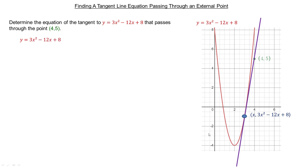Now we do need the derivative, so we're going to differentiate. Using the power rule: 3 times 2 is 6, and we decrease the exponent by 1, so it's 6x. The derivative of negative 12x is just negative 12. So y prime, or dy/dx, equals 6x minus 12.